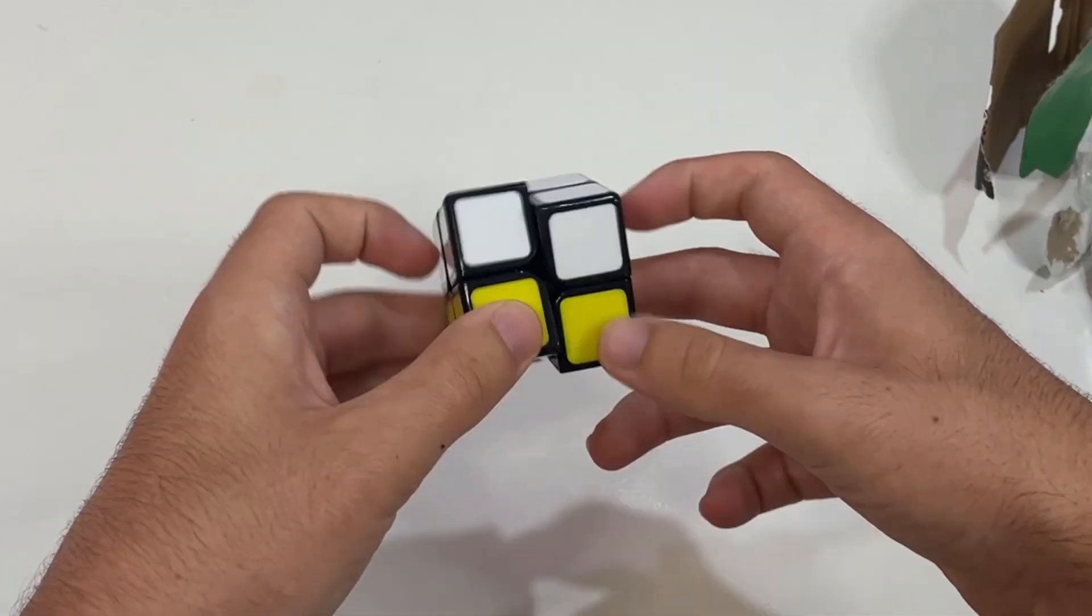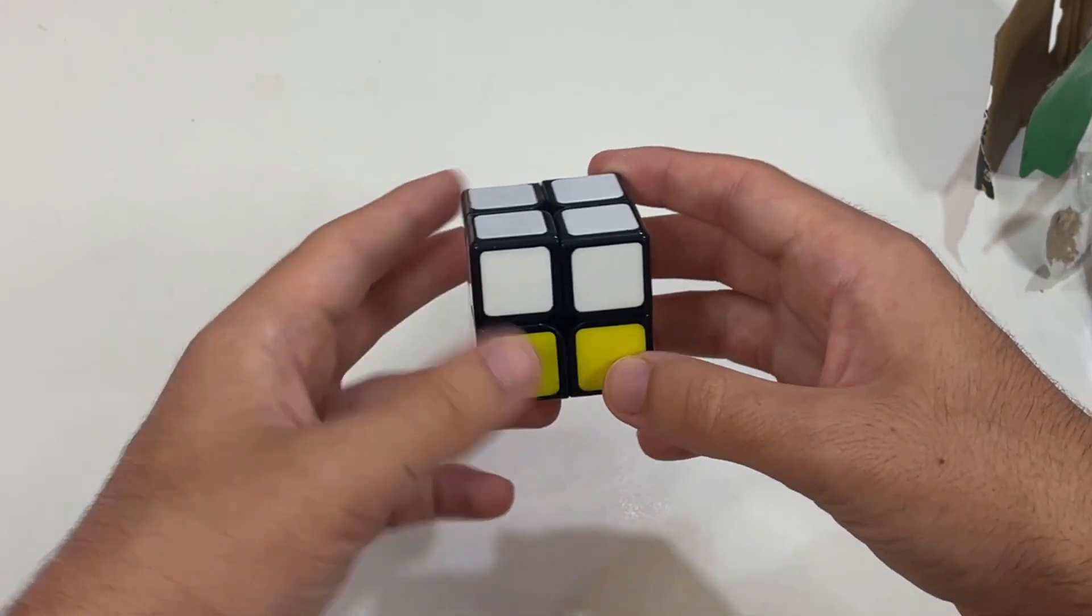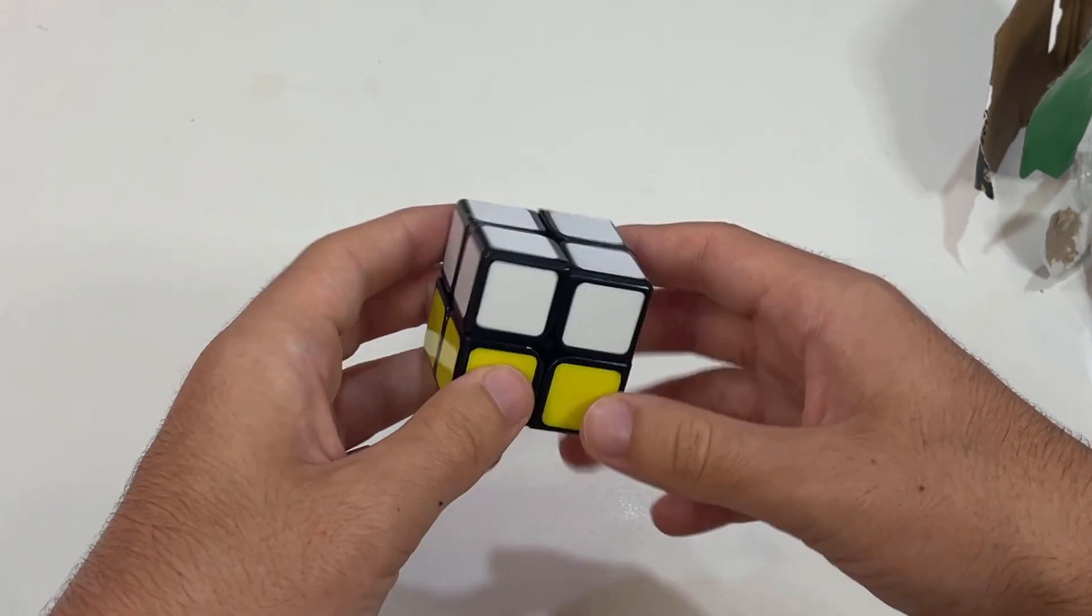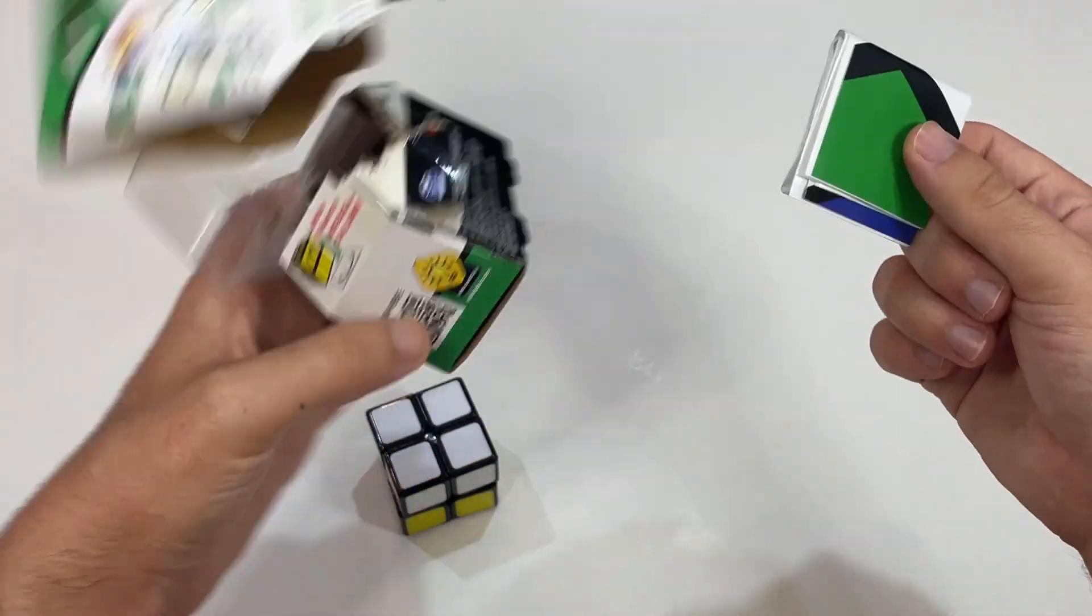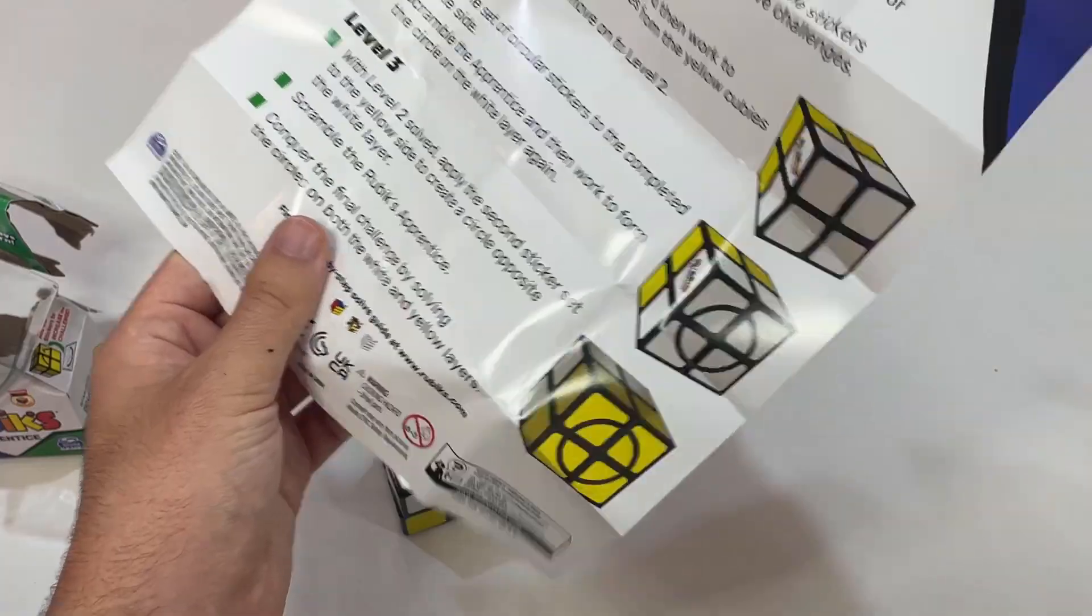It turns a tiny bit better than you'd expect a Rubik's brand to. It kind of feels like one of those Qiyi 2x2s from back in the day. It comes with this huge instruction pamphlet, so there's three different levels and I'm going to be trying out all of them.